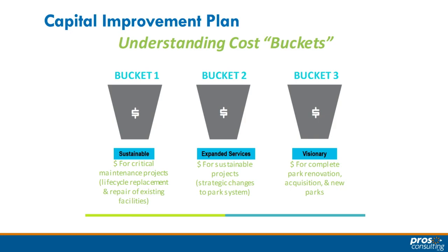The first bucket is life cycle replacement — what in your existing system needs to be replaced over the next 10 years. Just because this master plan has a 10-year planning horizon doesn't mean that life cycle replacement ends at year 11 — it is a continual and perpetual thing. The second bucket looks at your existing park system and identifies opportunities for improvement without developing raw land — loop trails, additional picnic shelters, playgrounds, skate parks. This lets us ask: how can you make the most of what you already have to better meet community needs?